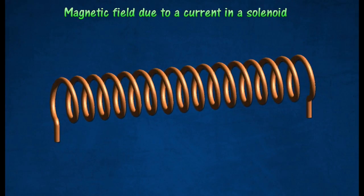A solenoid is a long cylindrical coil. A magnetic field is produced when a current flows through a solenoid.